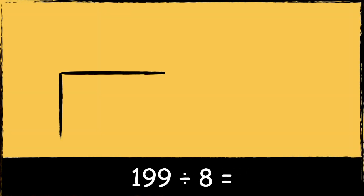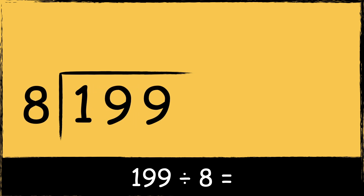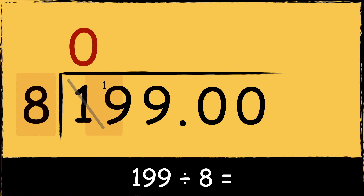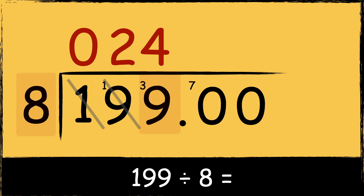Here's the next example: 199 divided by 8. Remember we need to place a decimal point and some zeros after the divisor. Eight goes into one zero times, so we have one left over. Eight goes into 19 twice with three left over. Eight goes into 39 four times with seven left over. As we're now working after the decimal point, we also need a decimal point in the answer. Eight goes into 70 eight times with six left over.